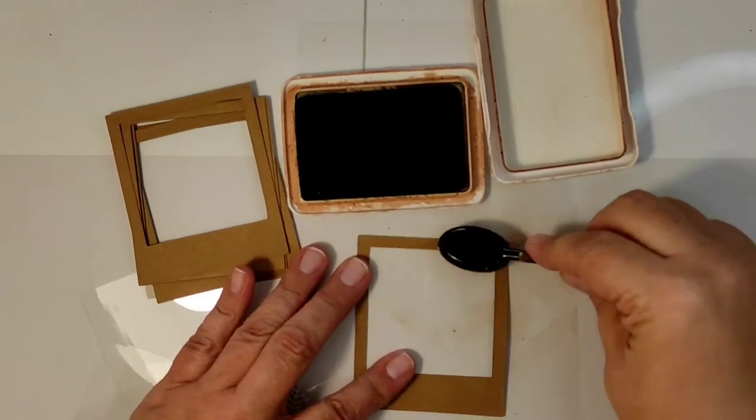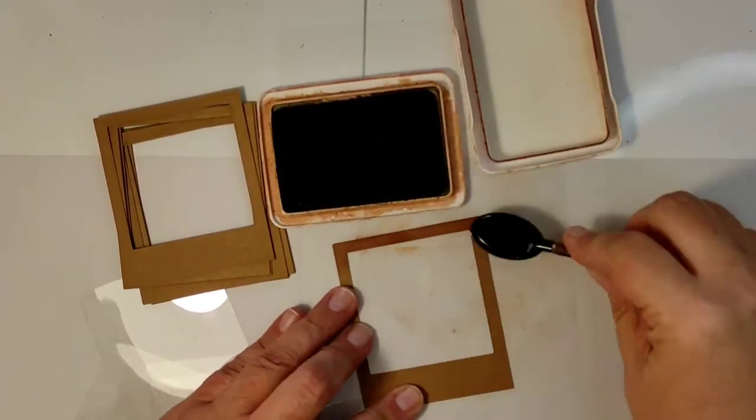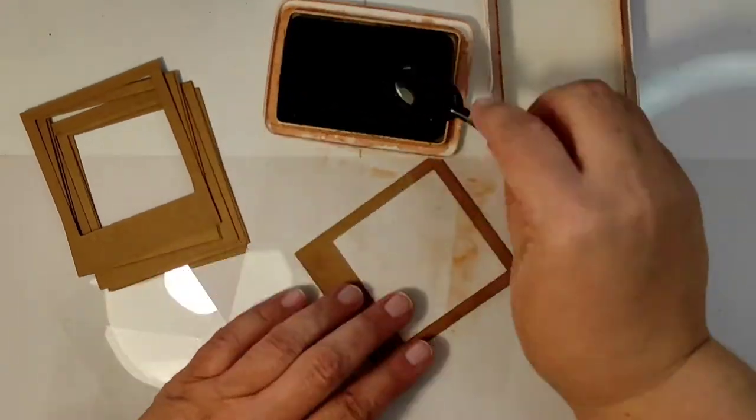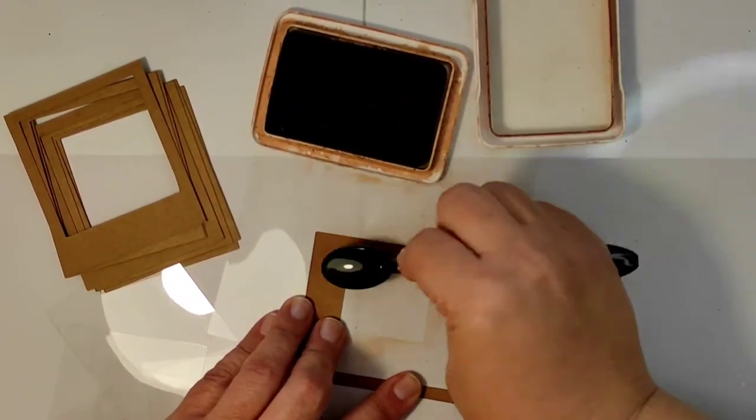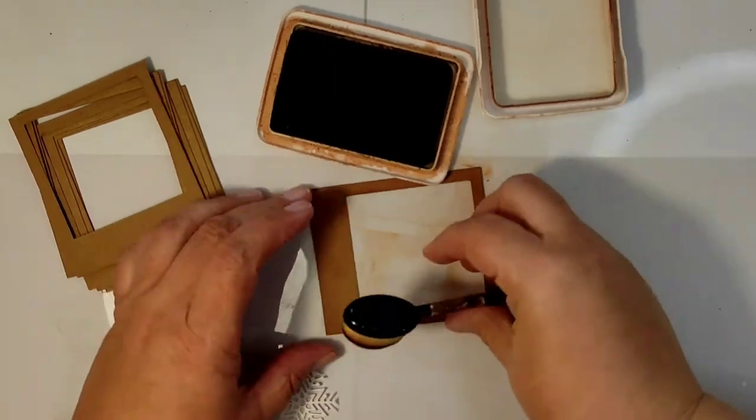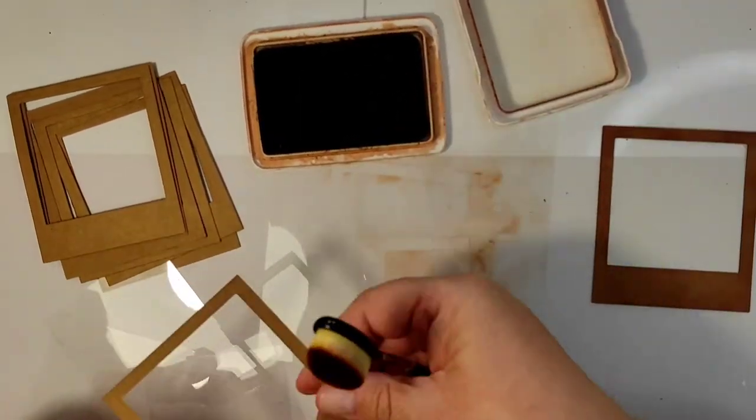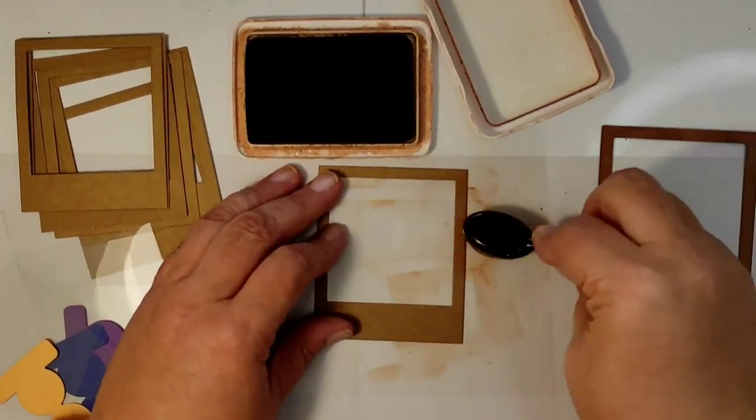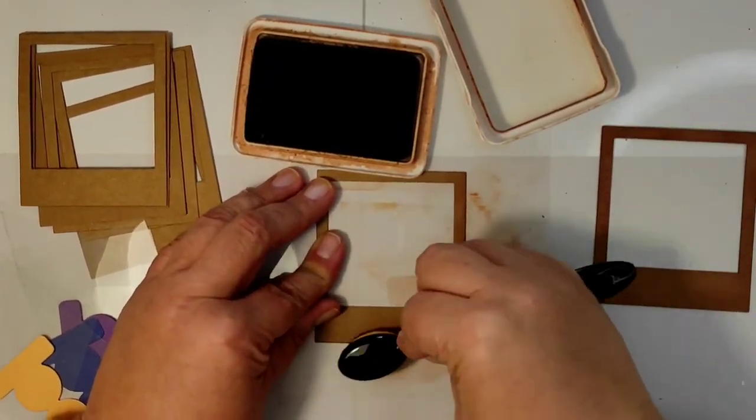So now we have all the elements cut. Let's age them a little bit just to take away the freshness of the paper. So I'm using the brown ink and I usually take the archival brown ink because of all the brown inks that I have this has the least amount of red shade.